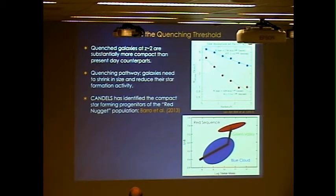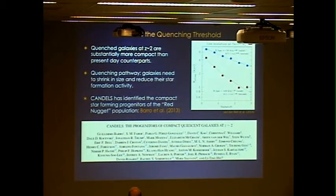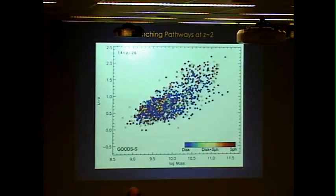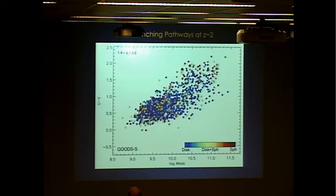With CANDELS, we think we've actually identified one of these quenching pathways by identifying the compact star-forming progenitors of these red nugget galaxies. This is work from Guillermo Barro. Essentially, Guillermo found compact star-forming galaxies that we think are the direct progenitors of compact red nuggets — their structures look identical and all we need to do is quench the star formation activity. In a dust-corrected U minus V color versus mass diagram, color coded by CANDELS visual morphologies, we get a nice blue cloud and red sequence.